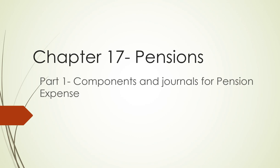Chapter 17 is pensions. Although the chances of you ever having to deal with pensions are slim since most companies don't have them anymore, we still have to cover it. In part one we're going to look at the components and journals for doing the pension expense, and then in part two we'll do the pension obligation and the pension assets.